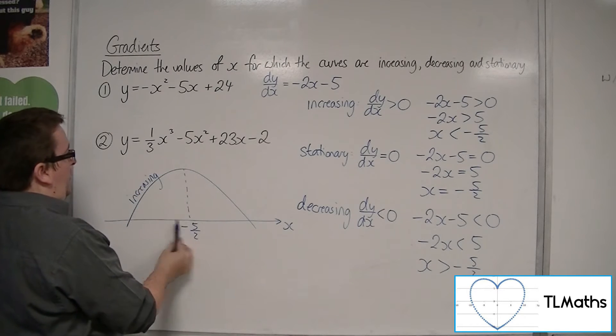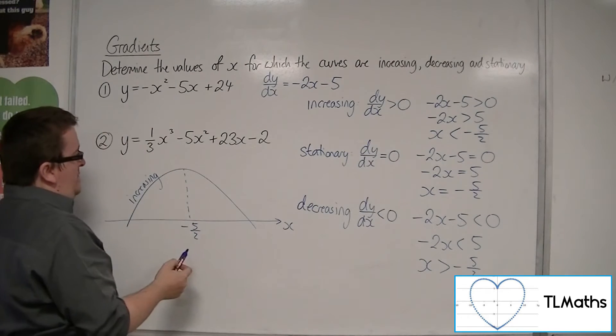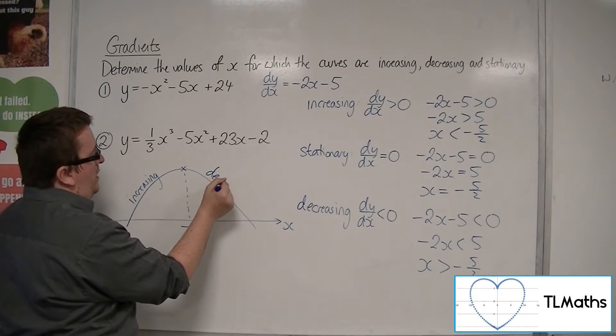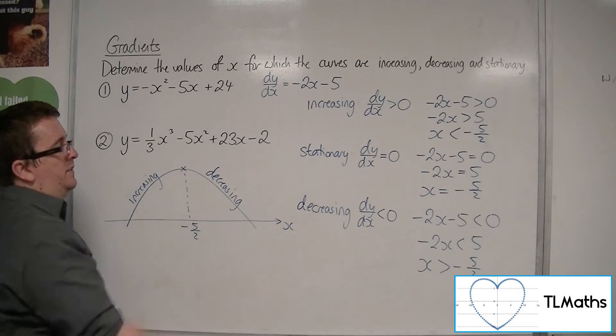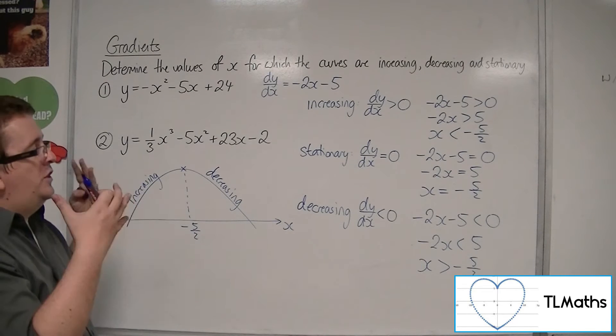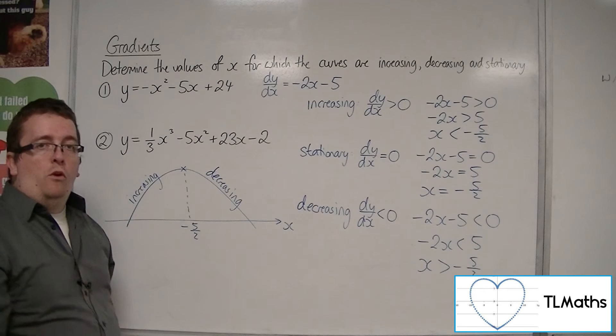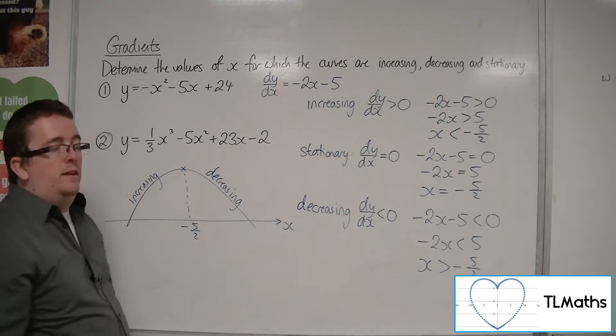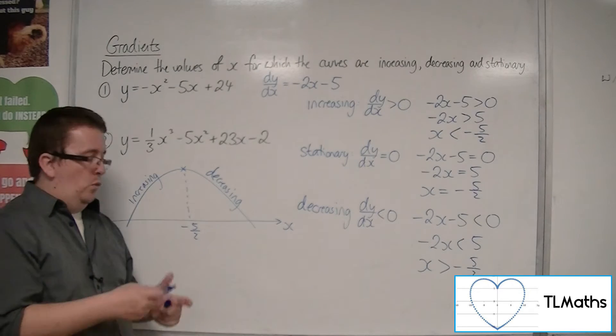So, when x is less than minus 5 halves, I know we're stationary at minus 5 halves. And, I know we are decreasing when x is greater than minus 5 halves. So, as long as I've found the stationary point, I can then draw a little graph of what this would look like to then identify the inequalities. But, doing it algebraically works just as well.